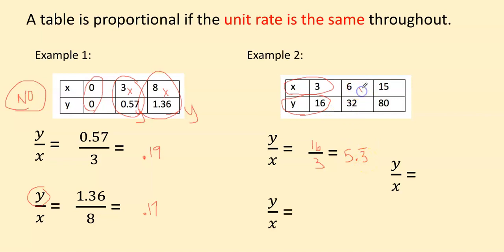All right, this is x, this is y. So that means that I need to have y in the numerator, so 32. Look at how long I'm spending on being careful with placing my numbers. x is 6, x is 6.